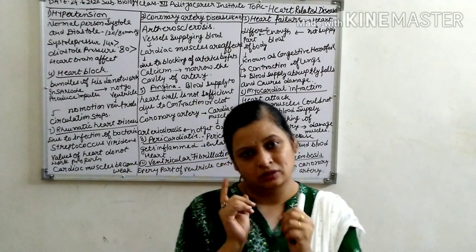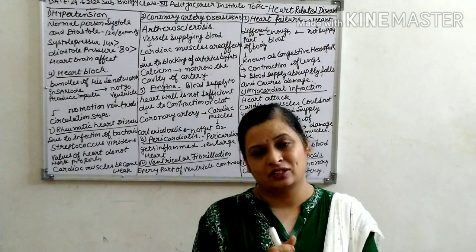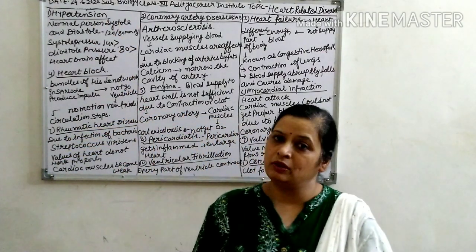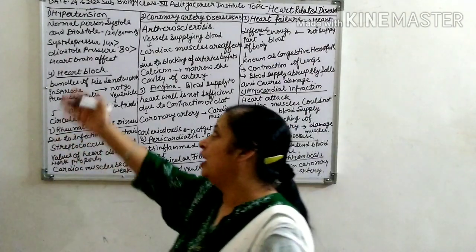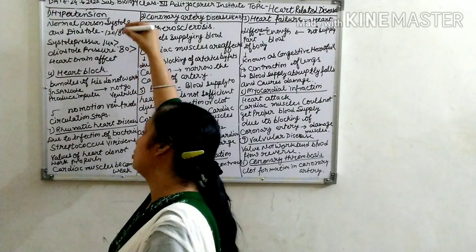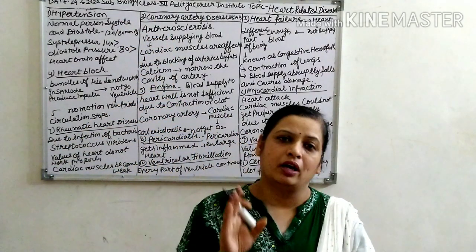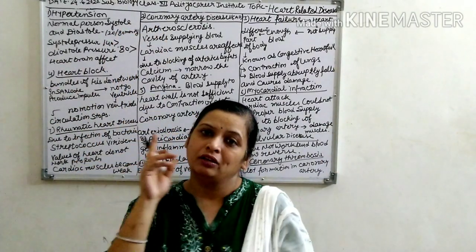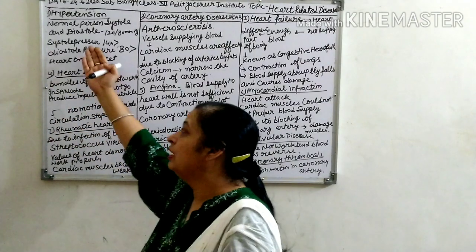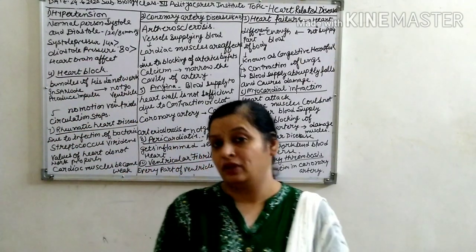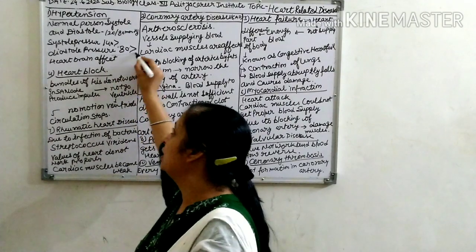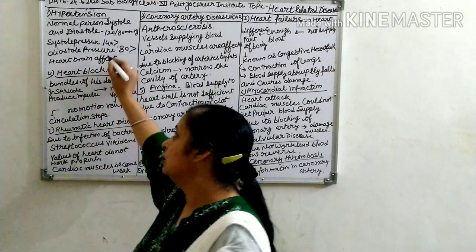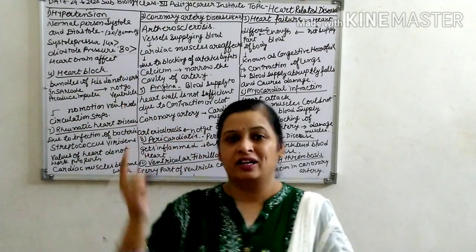Now we talk about heart diseases. First is hypertension, also called high blood pressure. The normal pressure — systolic and diastolic — is 120 over 80 mmHg. When the systolic pressure increases above 140 and diastolic pressure increases above 80, this situation is called hypertension or high blood pressure.